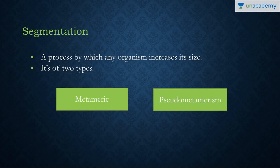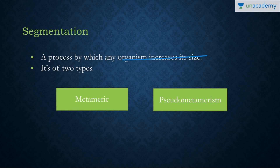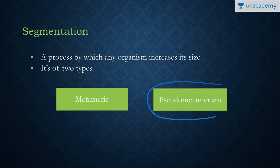Today I'll be talking about segmentation. Segmentation is basically the process by which an organism increases its size in the embryonic stage, and in some cases it also increases while in the adult form. The term segmentation means the organism is divided into segments, which may be true segments or false segments. True segments are present in metameric segmentation, while pseudo-metamerism refers to false segmentation.